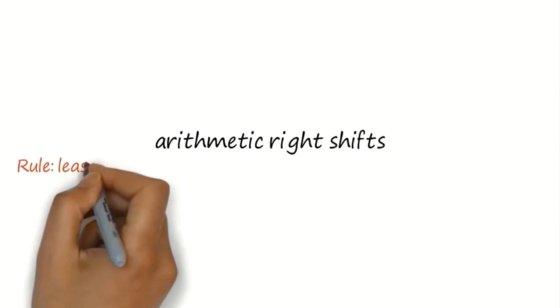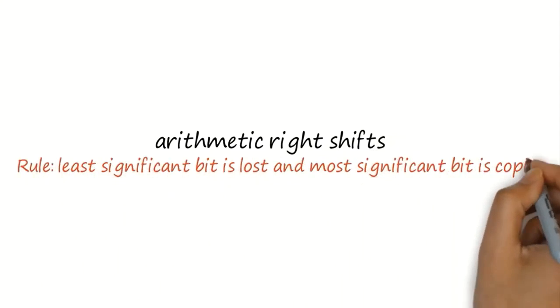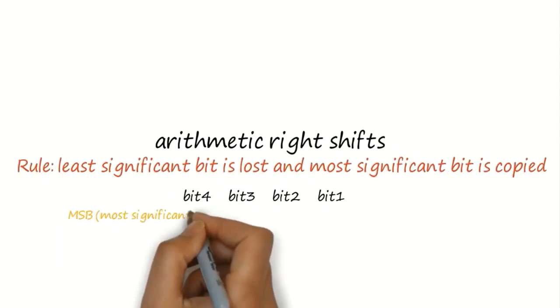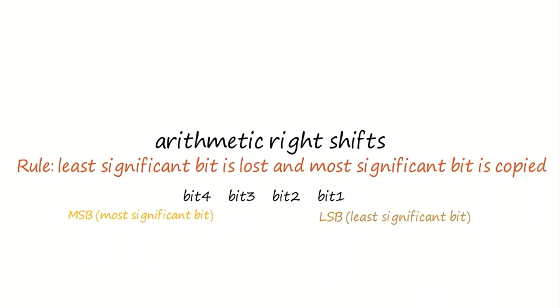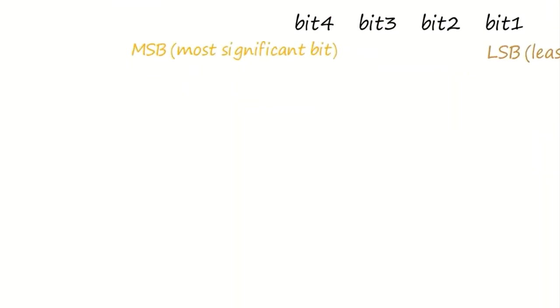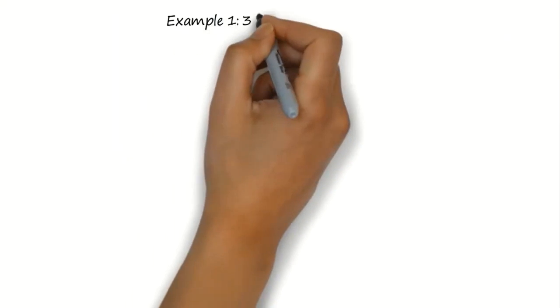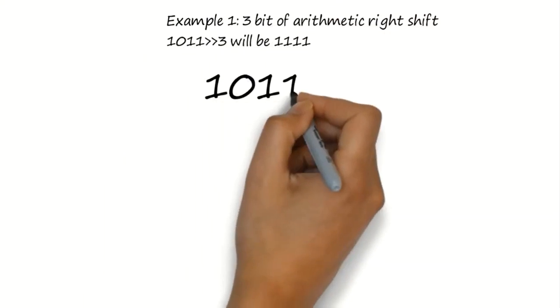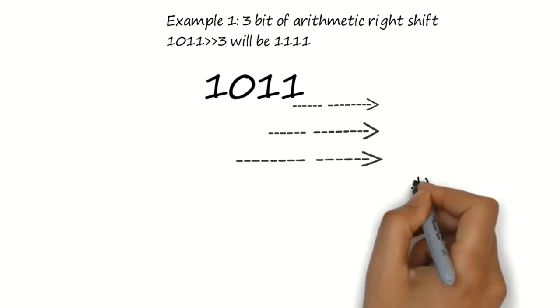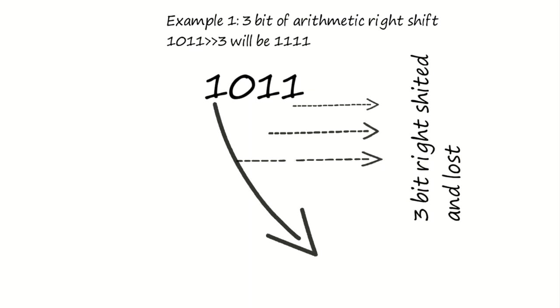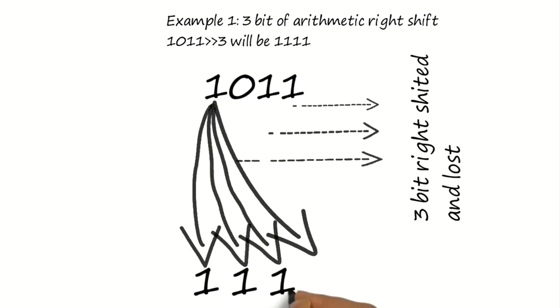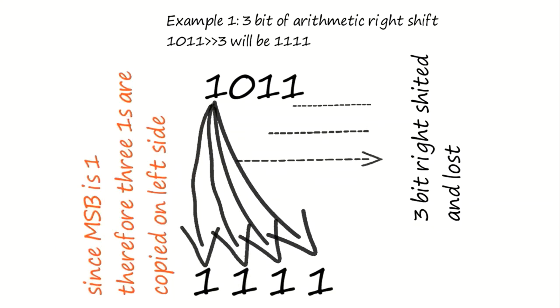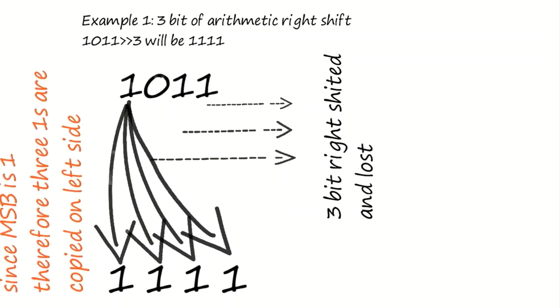On the other hand, shifting right with an arithmetic right shift, the least significant bit is lost and the most significant bit is copied. Here is the twist. First, consider example 1, where 1011 will be shifted 3 bits right. After 3 bit right shift, since MSB was 1, therefore all the left 3 bits will be replaced by 1.